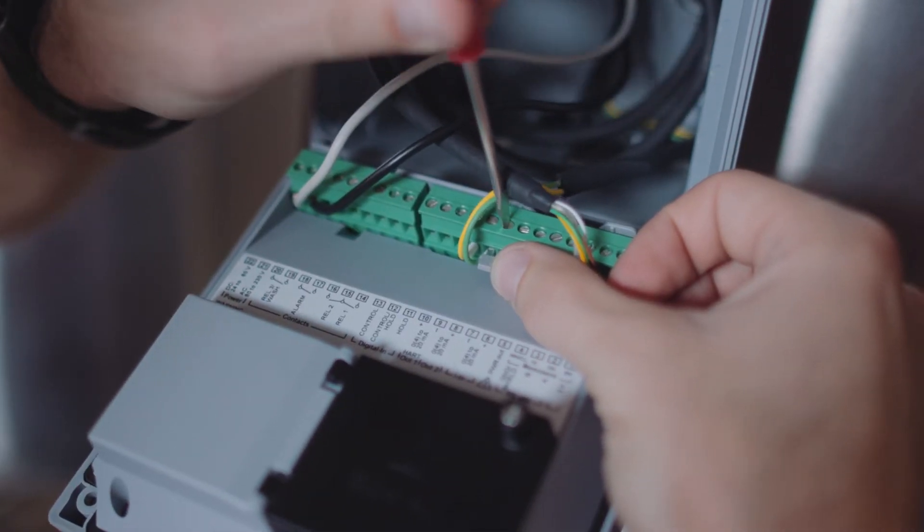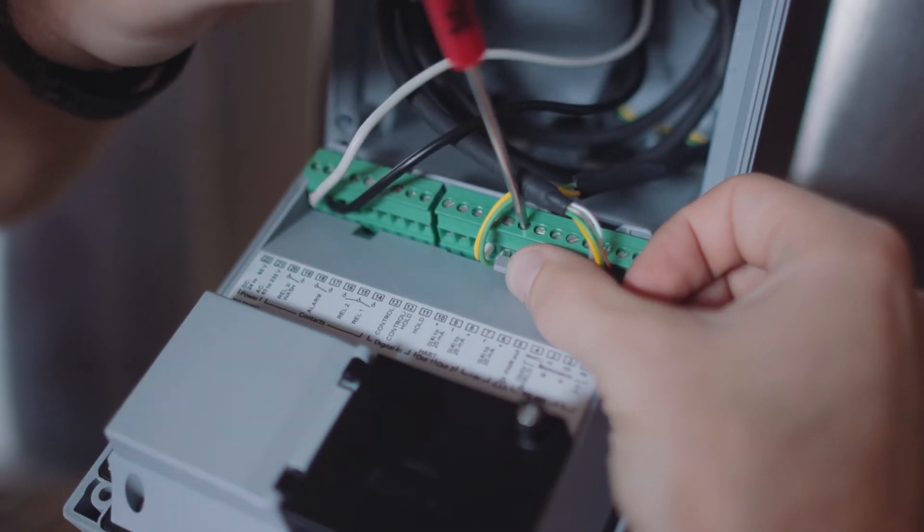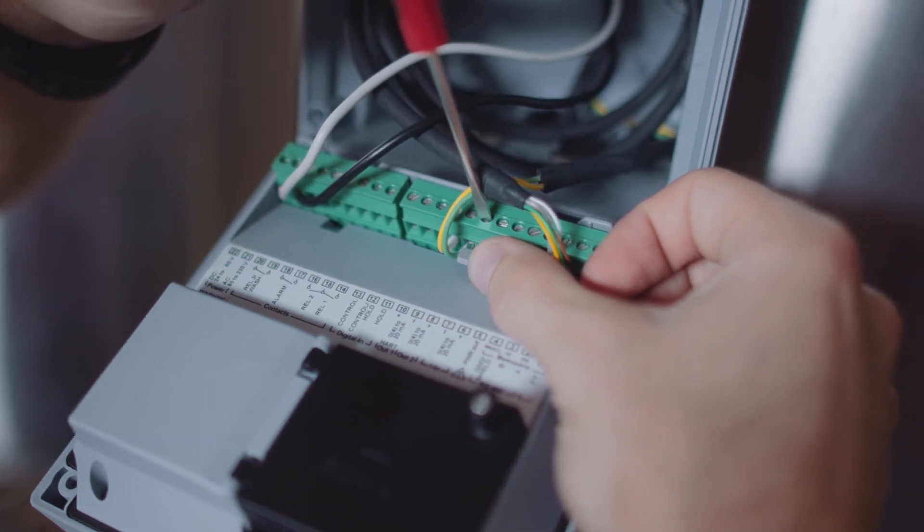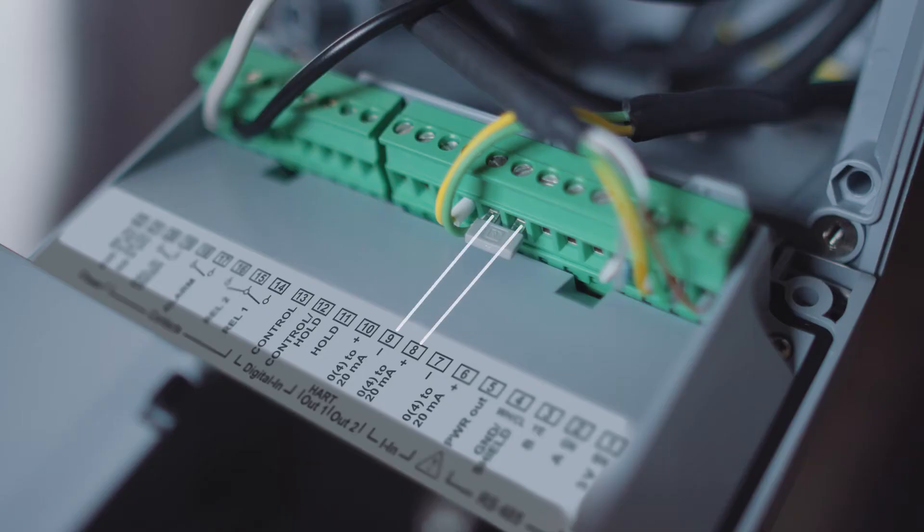If only one of the outputs is being utilized, a jumper can be applied to the second output to rid this error on terminals 8 and 9. Please note that both outputs share terminal 9. Jumpers are included in the accessory bag which is shipped with the transmitter.